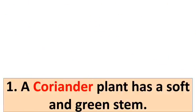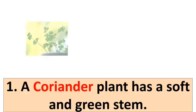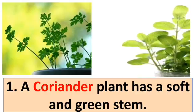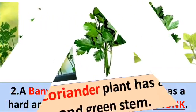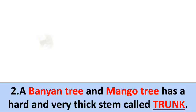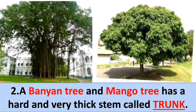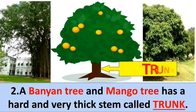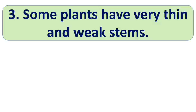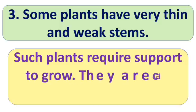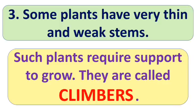Let's see some examples of different kinds of stem. First, herbs like coriander, mint, dill, fennel, etc. have soft and green stems. Next, a banyan tree and a mango tree have a hard and very thick stem, and it is covered with bark, which is called a trunk.